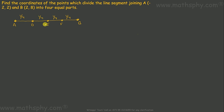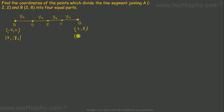Point E divides AB into 2 equal parts, meaning AE equals EB. Point A has coordinates negative 2 comma 2, and point B has coordinates 2 comma 8. This is X1 and Y1; this is X2 and Y2. We can name the division points as X3, Y3; X4, Y4; and X5, Y5.